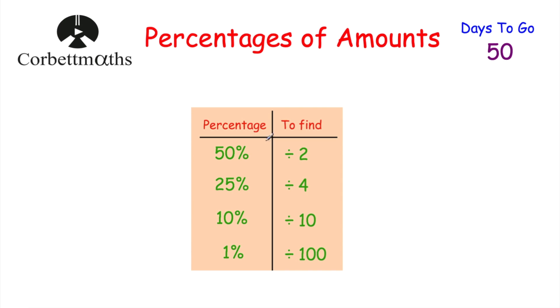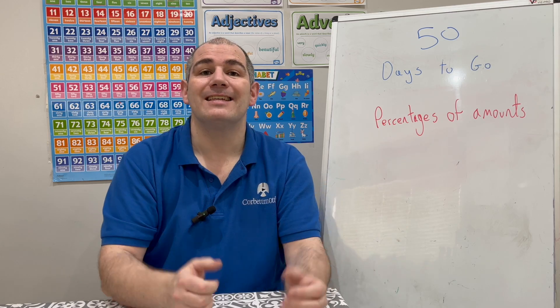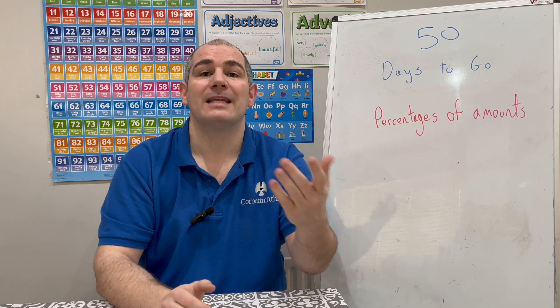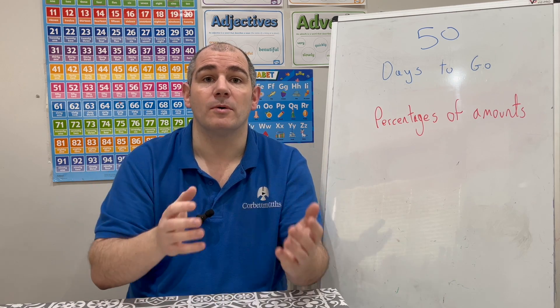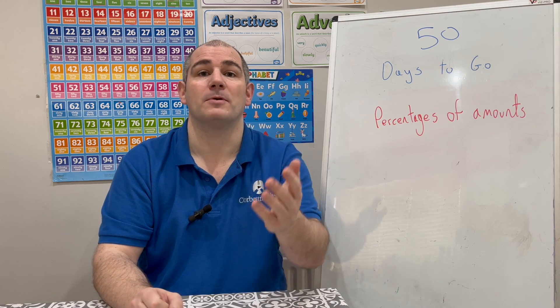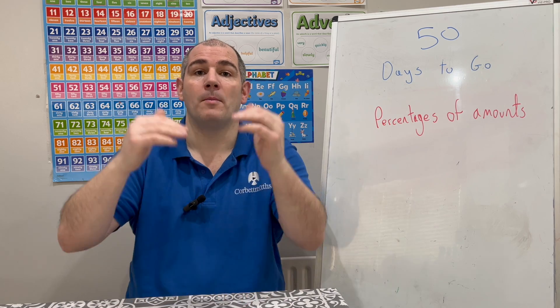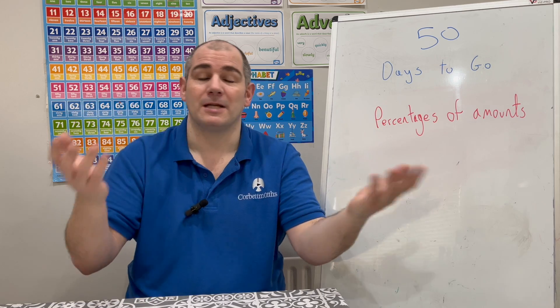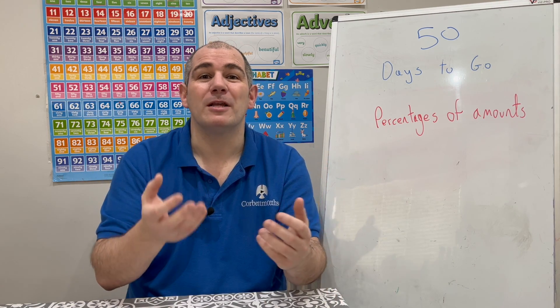In this video we looked at percentages. For non-calculator questions, the key building blocks are: 50% is divide by 2; 25% is divide by 4 or half and half again; 10% is divide by 10; 1% is divide by 100. You can use those building blocks to work out any percentage — for example, to get 5% get 10% and half it; for 2% get 1% and double it; for 6% get 5% and 1% and add them together.